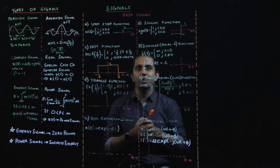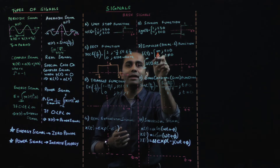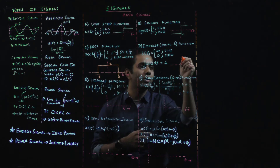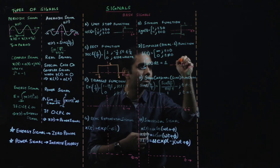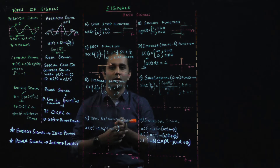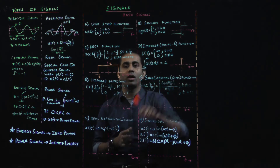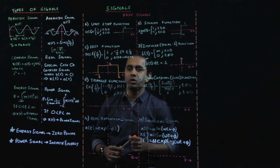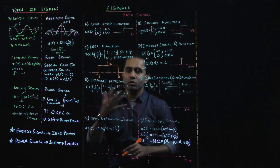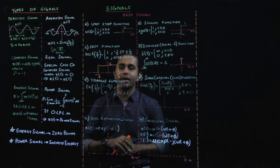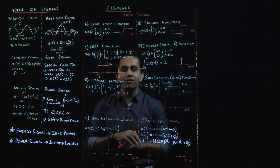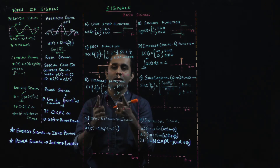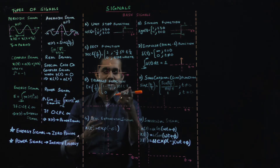An impulse function is simply a function with a value of infinity at t = 0 and a value of 0 everywhere else. These are our basic signals. Next is the triangle function, which, as the name suggests, looks like a triangle over a specific time period T, and does not exist outside that time — it goes from minus T to T with a peak magnitude of 1 at t = 0.